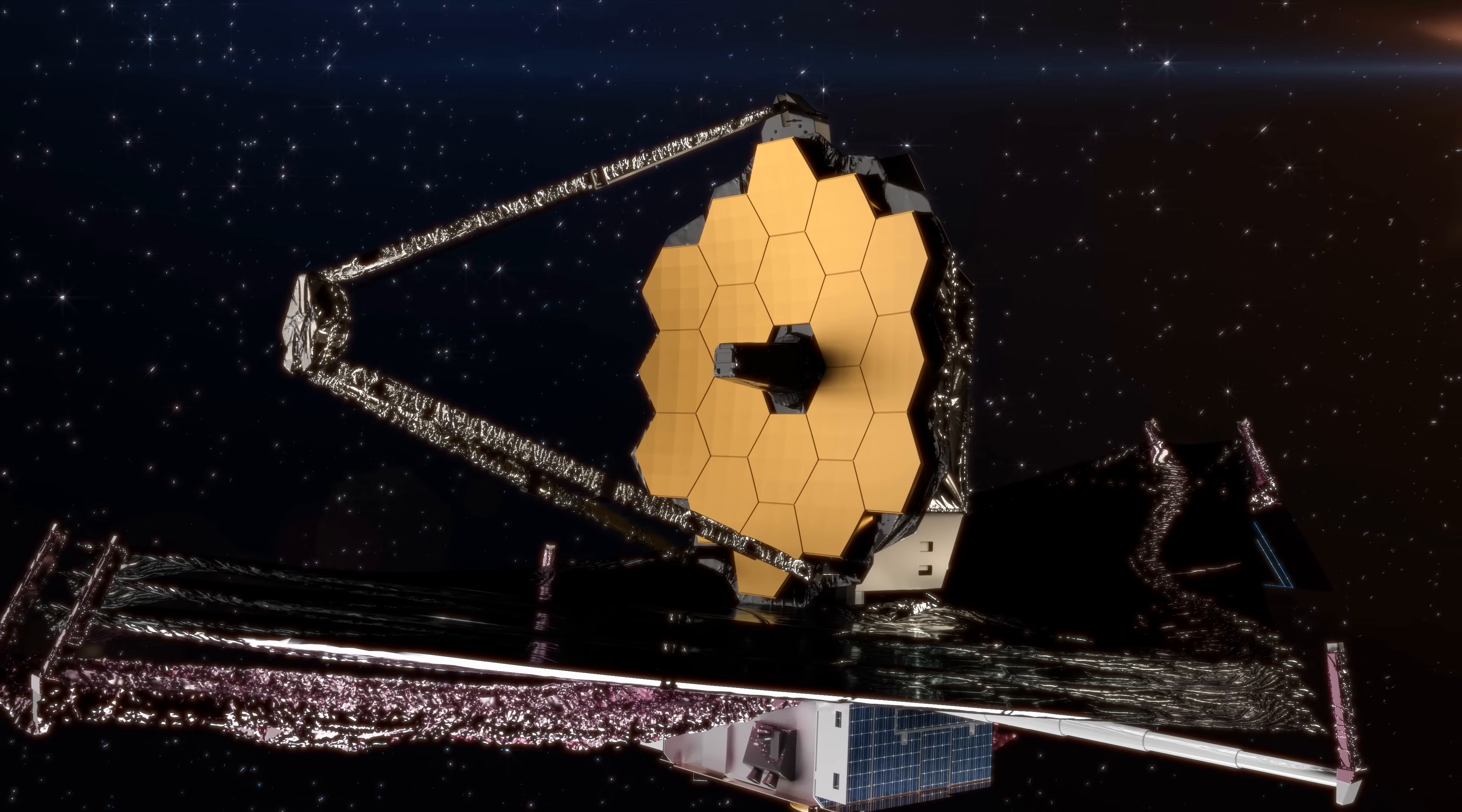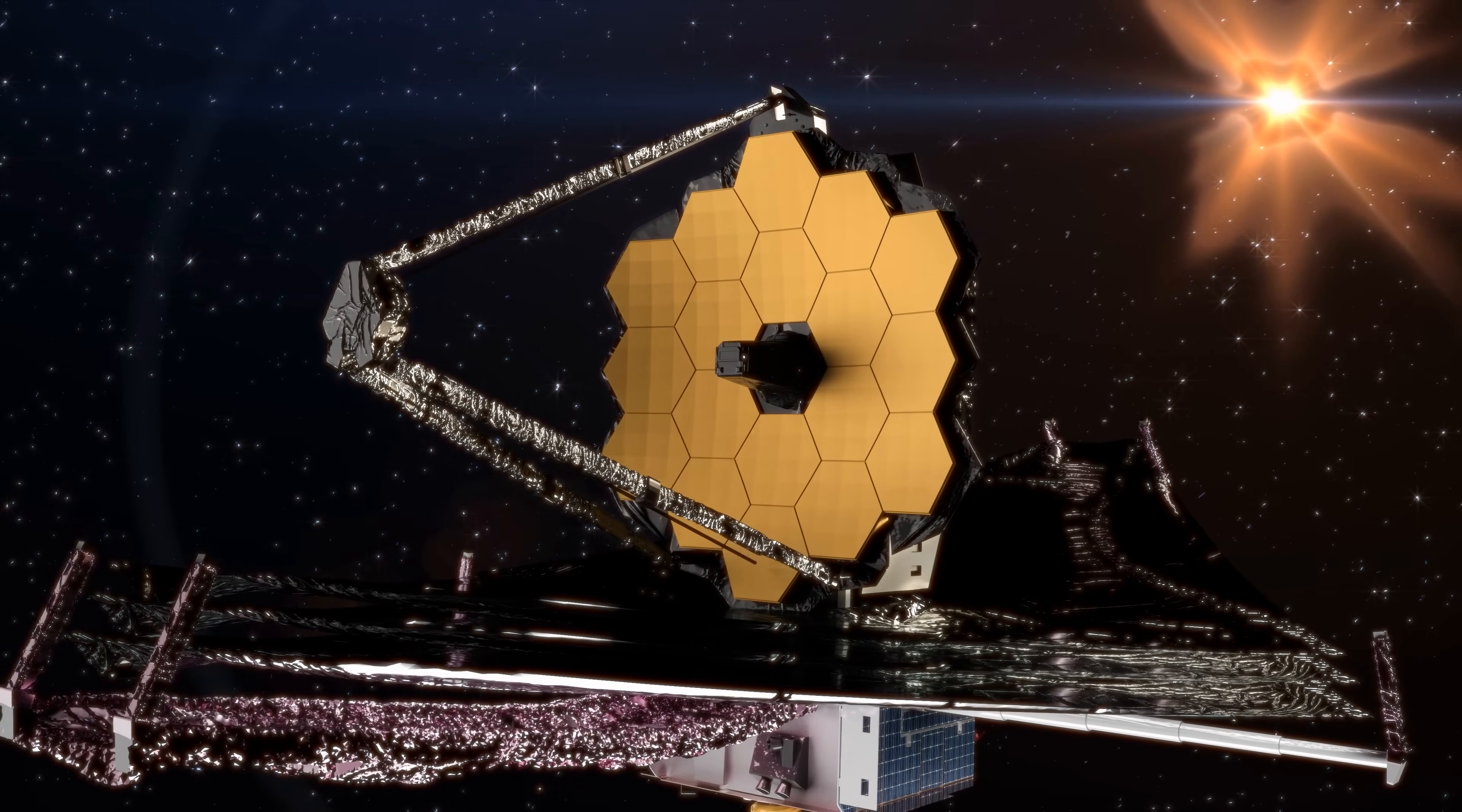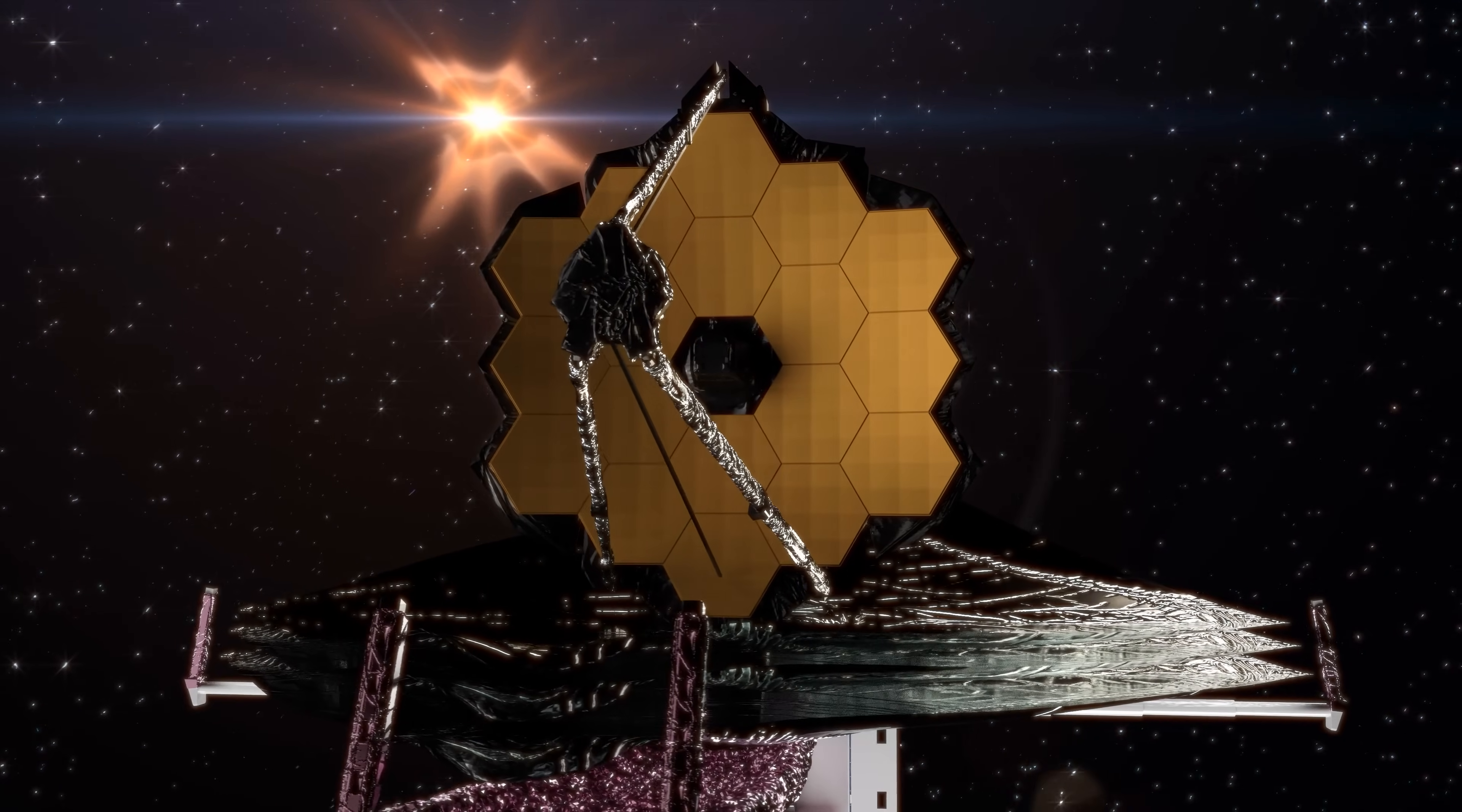Such colorful phenomena occur in nebulae surrounding very young stars when they eject their matter in the form of one or more jets into space at a tremendous speed of hundreds of kilometers per second.